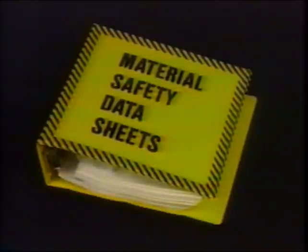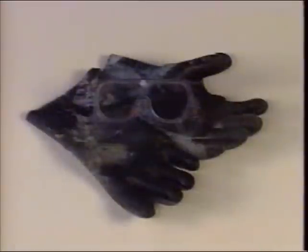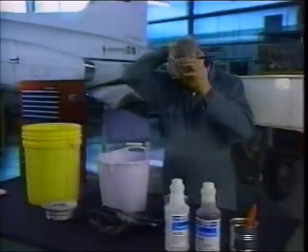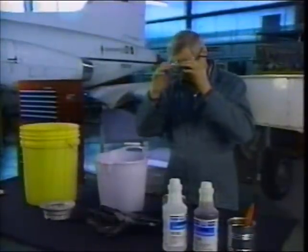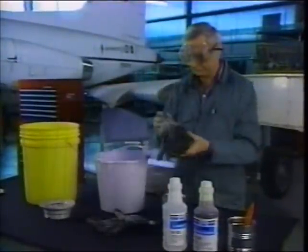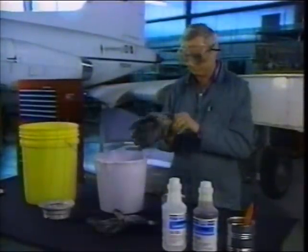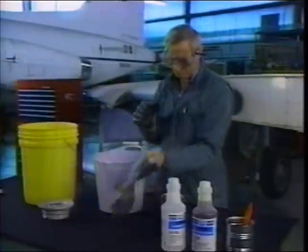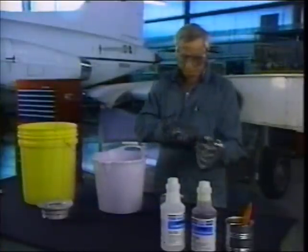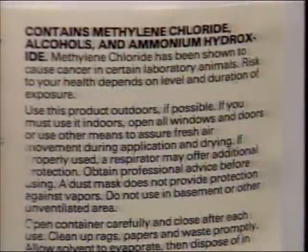Whenever you are working with chemical paint removers, check the label or material safety data sheet for any special manufacturer's instructions you may have to follow. Wear protective goggles and rubber gloves and protect your skin from accidental splashes. Do not use chemicals of any sort in small unventilated areas and always wear a respirator when directed by the manufacturer's instructions. Do not use paint removers containing acid on aircraft surfaces.